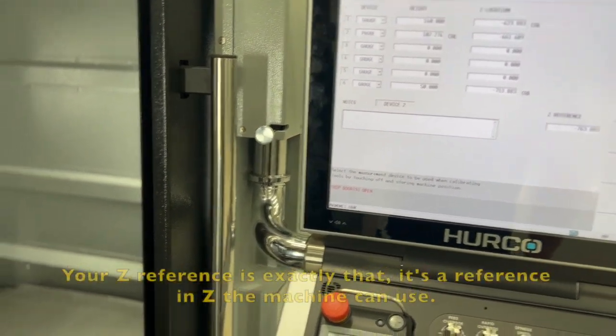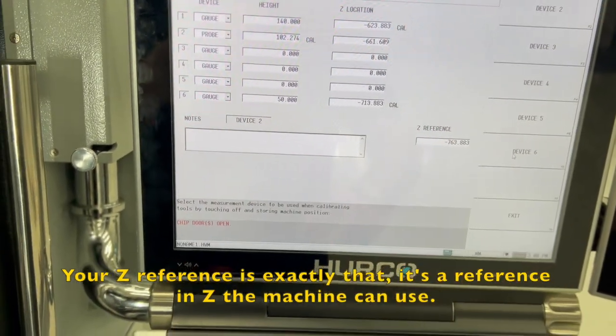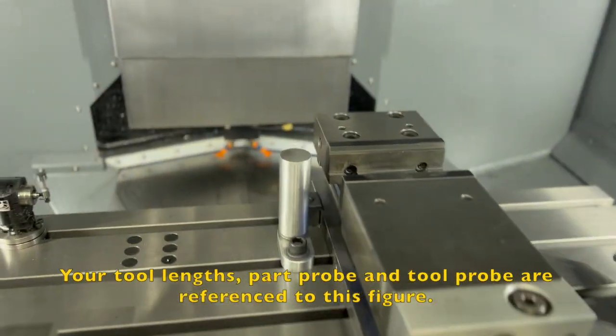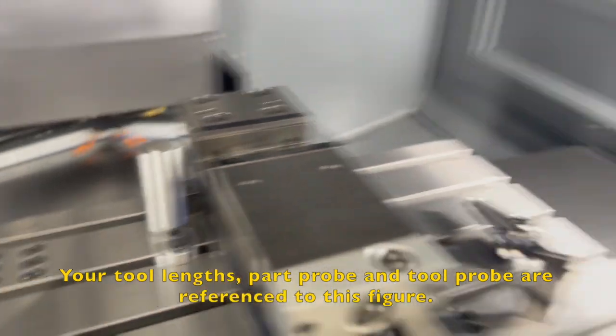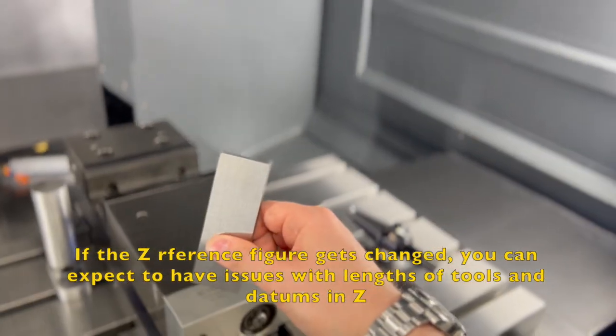What do I mean by a be all end all figure? Well this is the figure that governs everything so all your measurements for your probe and stuff like that. It's telling the machine where this table is.